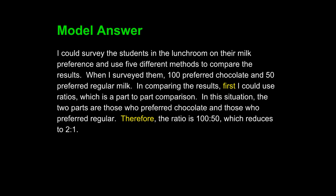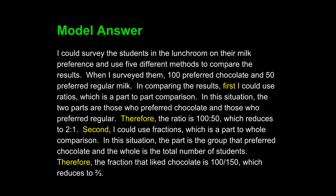Of course, in sequence writing, the word 'first' is key. As I continue, we can see the continuation of this same transition language. Second, I could use fractions, which is a part-to-whole comparison. In this situation, the part is the group that preferred chocolate and the whole is the total number of students. Therefore, the fraction that liked chocolate is 100 over 150, which reduces to 2 over 3. I've used the same sort of transition language in this second example. And, of course, as in good sequence writing, I've used 'first' for my first and 'second' for my second.